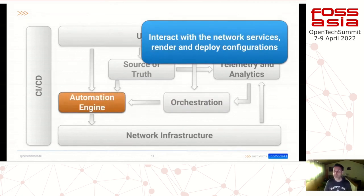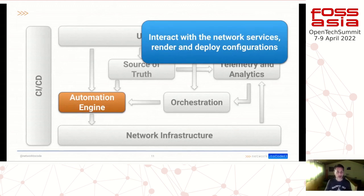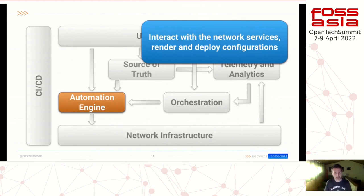Then we move into what is more specific to network automation: the automation engine. The automation engine is where we put the different tooling that helps us move the intended state — which is a data model, a reference — into something that the network infrastructure understands. On the network infrastructure we have routers and firewalls from multiple vendors supporting different interfaces. Maybe one only supports CLI because it's a legacy device, or SNMP. But we also have to deal with new interfaces like GNMI or Netconf, or even cloud network services with custom APIs. The automation engine takes the model and translates it into something we can actually activate.